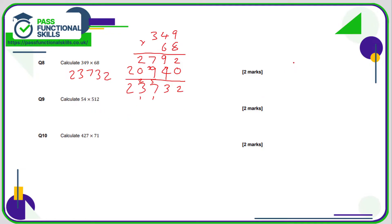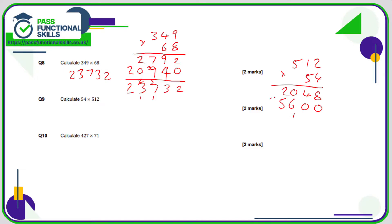Question 9: 512 goes on the top and the two-digit number on the bottom. 4 twos are 8; 4 ones are 4; 4 fives are 20. Moving to the 5 of 50, put in a 0: 5 twos are 10, 0 carry 1; 5 ones are 5 plus 1 is 6; 5 fives are 25. Adding together the answer is 27,648.